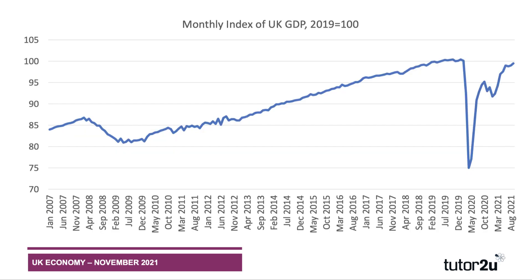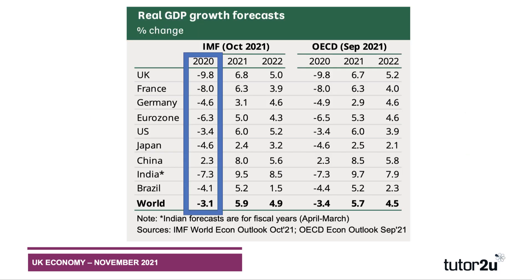What does the path of real GDP look like for the UK? This chart takes us from 2007 all the way through to the autumn of 2021. We see the recession in late 2008 and 2009 brought about by the global financial crisis, then a period of slow steady recovery. The index is based to 2019, so it reaches 100 by 2019. Then there was the collapse in output as the pandemic struck, followed by a rebound in GDP heading into 2020 and 2021. UK real GDP is estimated to have grown by 0.6% in September 2021, but it still remains below its pre-coronavirus pandemic level.